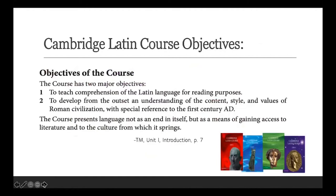I'm going to begin by talking about the Cambridge Latin Course objectives. The two major objectives are to teach comprehension of Latin for reading — fundamentally, this is what we're after. In this particular course, it's with reference to the first century. We think about content, style, Roman civilization, history, and culture, and all of those things feed into our notion of comprehension.